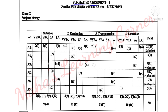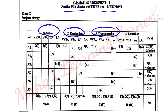Summit Assessment 1 blueprint part 2 covers 4 lessons. The question types are: very very short answer questions, very short answer questions, short answer questions, and long answer questions — each distributed across the lessons.